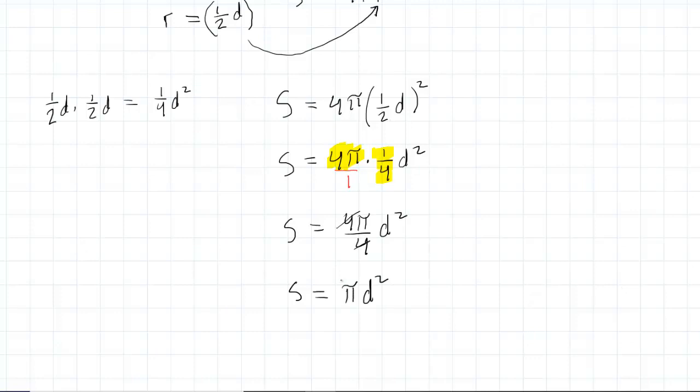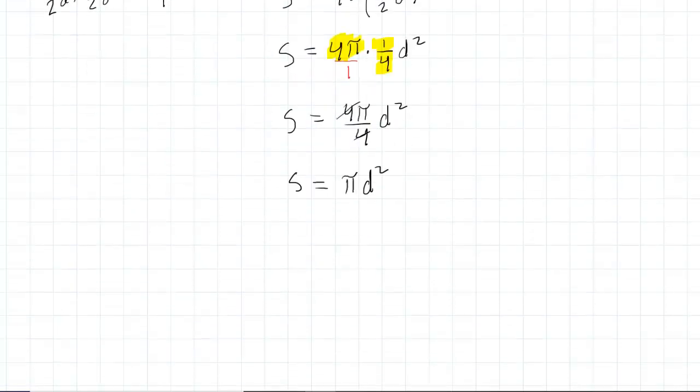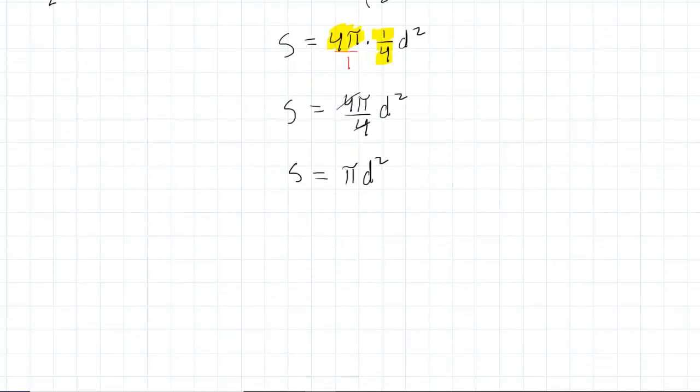This is a wonderful formula because it has surface area in terms of diameter, but we need to transform it into the language of rates. And in order to do that, we differentiate both sides of the equation. We take the derivative of both sides of the equation.